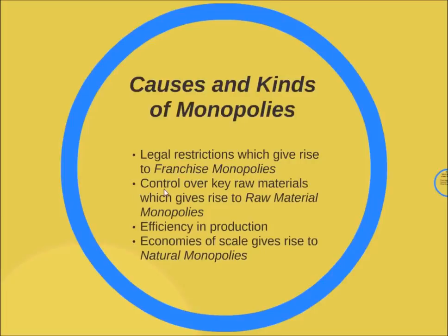Another cause is that some producers have complete control over the key raw materials used in the production process, which is why other producers cannot enter that particular industry. We can take the example of the Aluminium Company of America — it monopolized the aluminium industry before World War II because it acquired control over almost all resources of bauxite supply. Such monopolies are known as raw material monopolies.